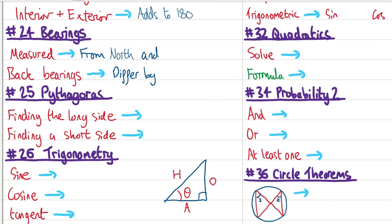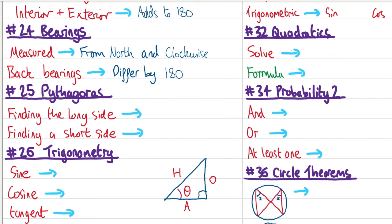Bearings. These are always measured from north and always measured clockwise. Back bearings are always different by 180 — so if you know the bearing from A to B, the bearing from B back to A is always 180 different.